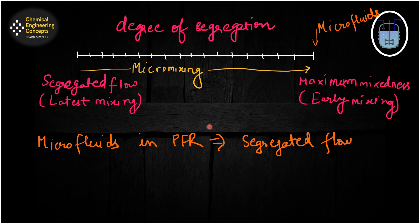When it comes to micro fluids in a plug flow reactor (PFR), we have two extents: the plug flow reactor and the mixed flow reactor. If a micro fluid, macro fluid, or any fluid goes into a PFR, it gives the same conversion. This is because in a PFR we have a number of small batch reactors, and whether the fluid is micro or macro, they spend the exact same time inside the reactor and have the same conversion.